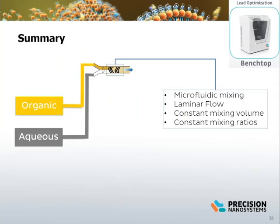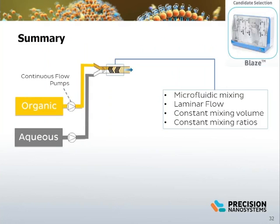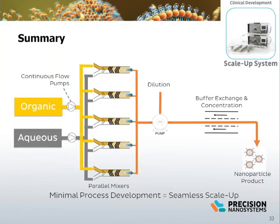In summary, nanoparticle development starts on the bench scale, where lead candidate development can be done in the milliliter scale on the NanoAssembler bench top. Microfluidic mixing using laminar flow enables controlled mixing and reproducible results. The exact process parameters developed on the bench top can be transferred to the Blaze, a continuous flow manufacturing instrument, to produce nanoparticles up to one liter in volume. Finally, scale-up to clinical manufacturing is achieved by direct scaling of the process parameters to the scale-up system with parallel mixers. Minimal process development is required for the scale-up of a robust nanoparticle production process.